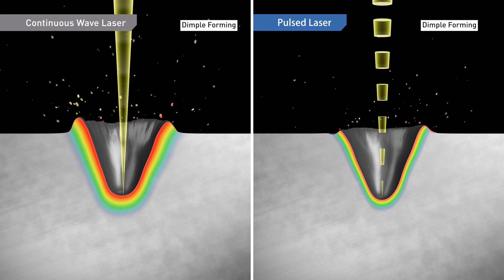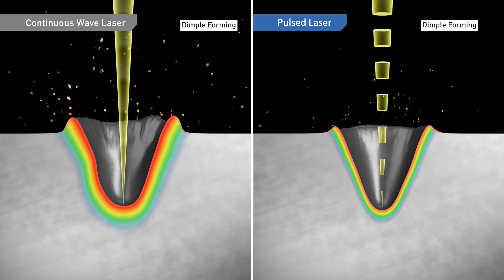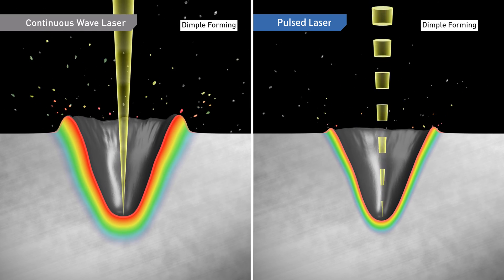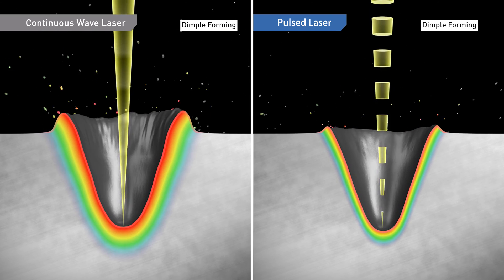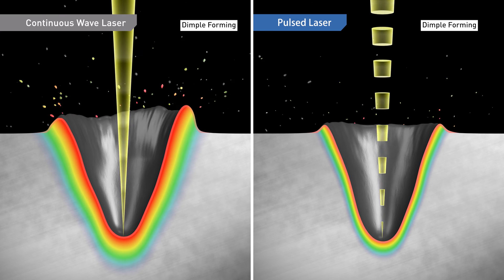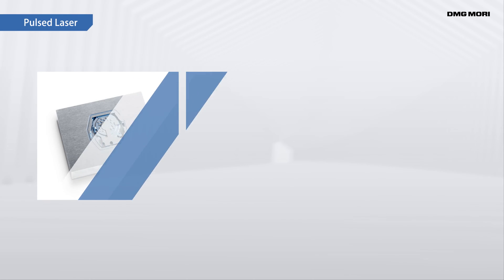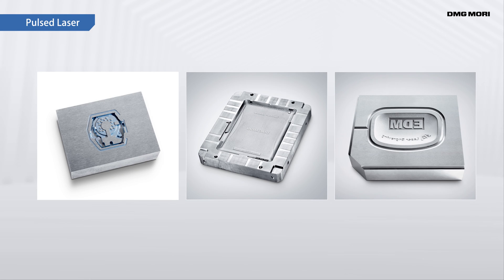The effects of heat on the material are mitigated, reducing dross such as surface burrs and melted material adhering near the processed area. For this reason, ultra-short pulsed lasers are commonly used for precision processing.